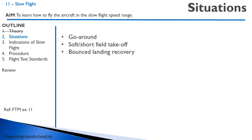The same thing happens on a short or soft field takeoff, where we take off at a very minimum speed. In a soft field takeoff, we take off in a nose-high, high power setting. As we get airborne, sure, we got off the ground quickly, but we do need to accelerate and get out of slow flight.